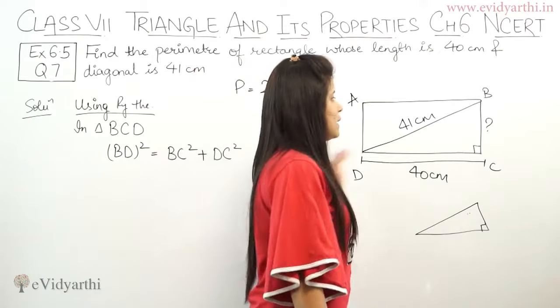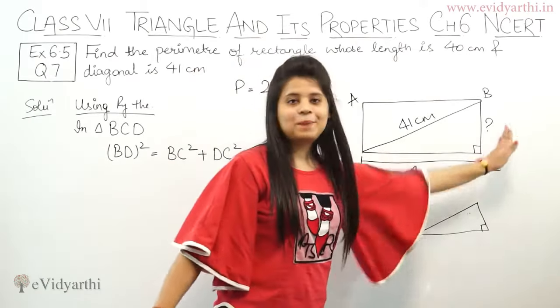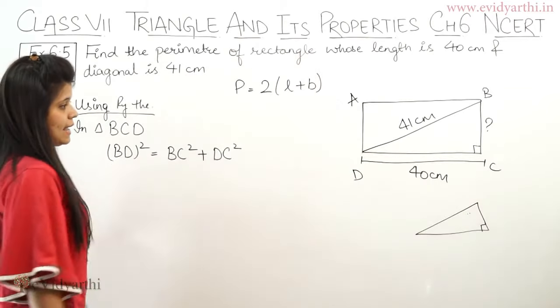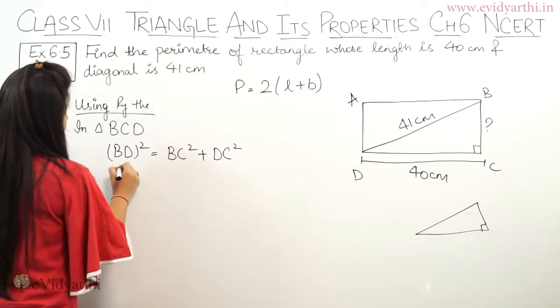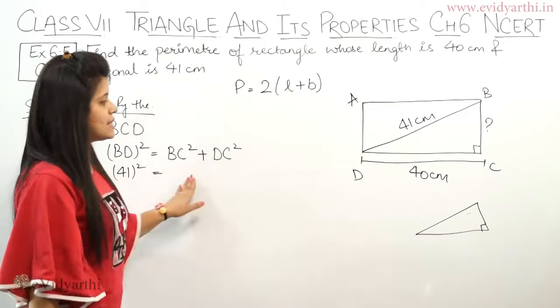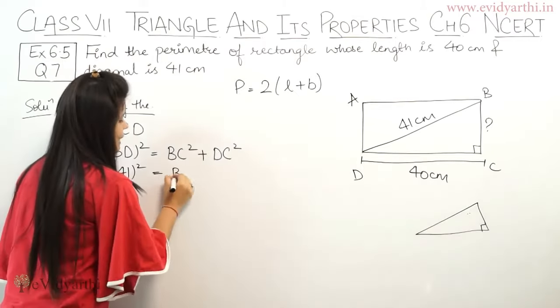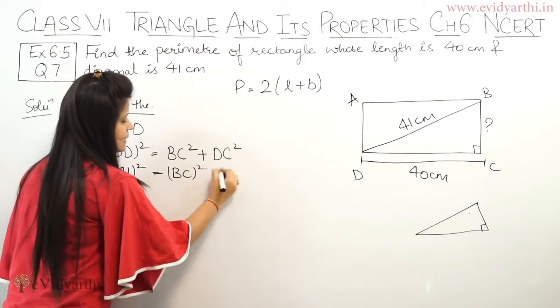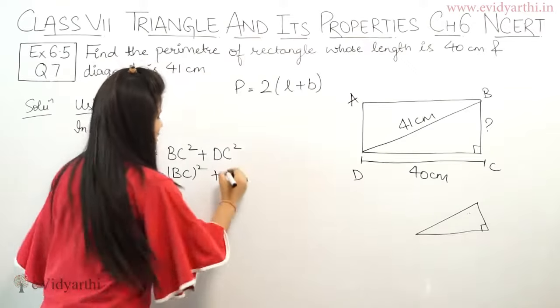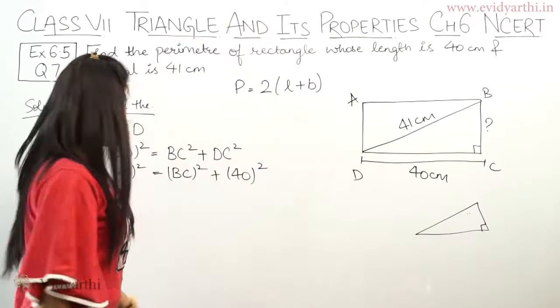If we use Pythagoras theorem, hypotenuse square equals to this square plus this square. So BD we can write as 41² equals BC² plus DC which is 40².